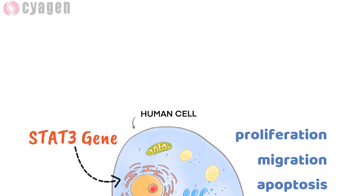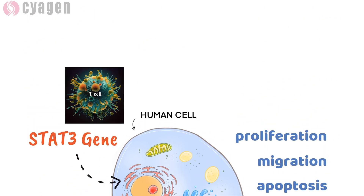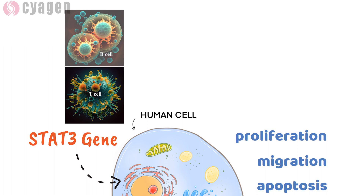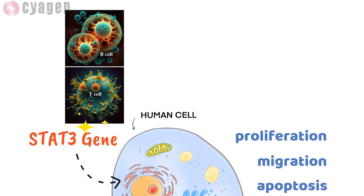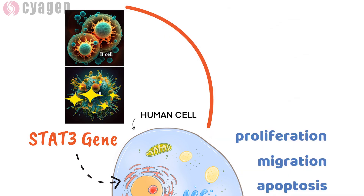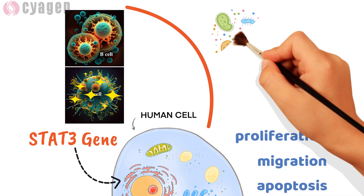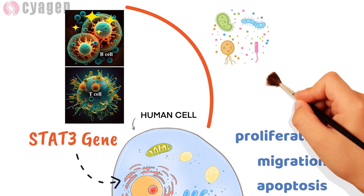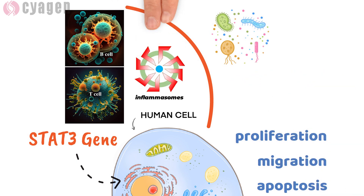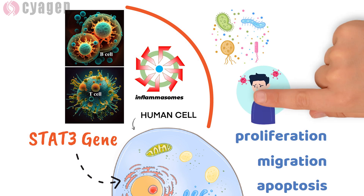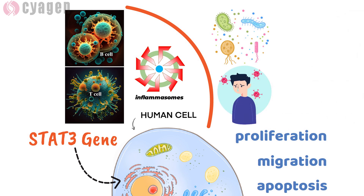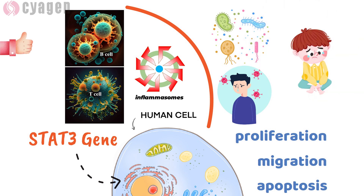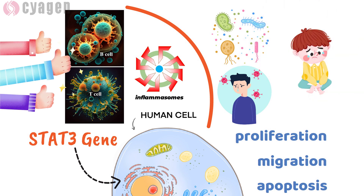Additionally, in the immune system, the STAT3 protein facilitates signal transmission for the maturation of T and B immune cells, which aid in controlling the body's response to bacterial and fungal threats. Furthermore, the STAT3 protein plays a crucial role in regulating inflammation, a response mechanism of the immune system to infections or injuries, and it affects cellular processes that aid in promoting allergic reactions.